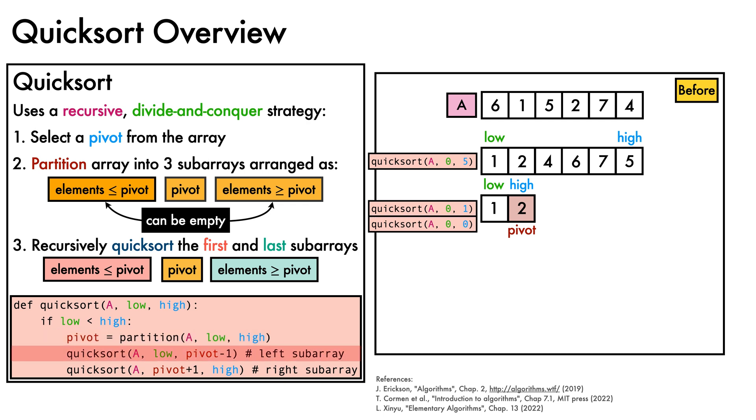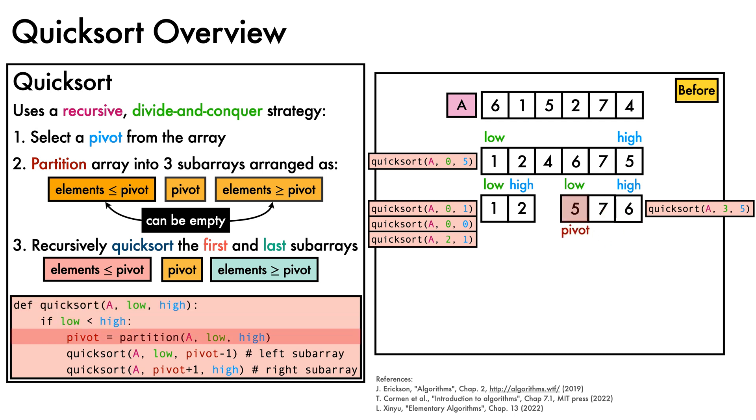This time, we call Quicksort with an empty left subarray and an empty right subarray, so nothing remains to be done, and we recurse up the stack and move back to our call to Quicksort on the right subarray, which we again duplicate to illustrate our current stack depth. Since low is less than high, we run the partition function to split into three subarrays, and select the last element as pivot before performing step 2.